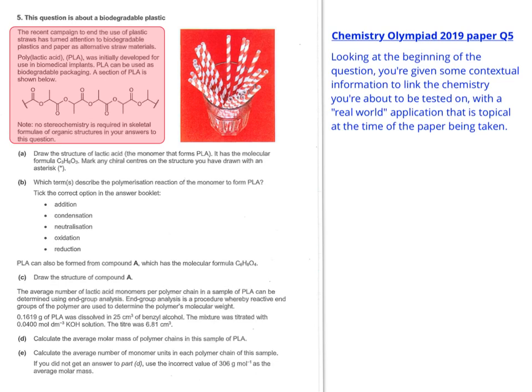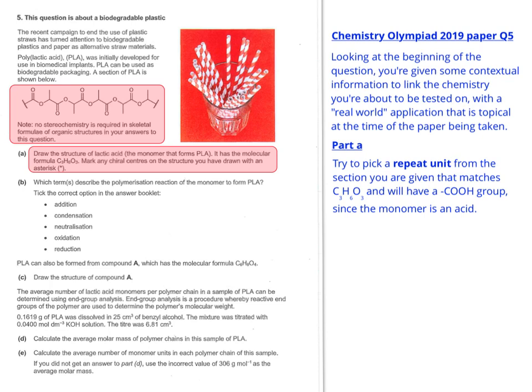So they're talking about polylactic acid. And they haven't given you the structure of lactic acid, but it tells you that the molecular formula is C3H6O3. So let's look at the information that we're given. We know that it's an acid, so we know it'll have a COOH group. We know it's an organic acid, and you can clearly deduce from the section of the polymer that there might be COOHs there.